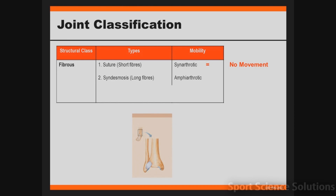The second type of fibrous joint is called a syndesmosis joint, which means long fibres. The example here is the distal tibiofibular joint, which is a small ligament that joins the tibia and the fibula together in our lower leg. The mobility classification of this joint is called amphiarthrotic, which means slightly movable. The slightly longer fibres allow for a little bit of give, so they can't bend and flex like typical joints, but they're just a little bit flexible.